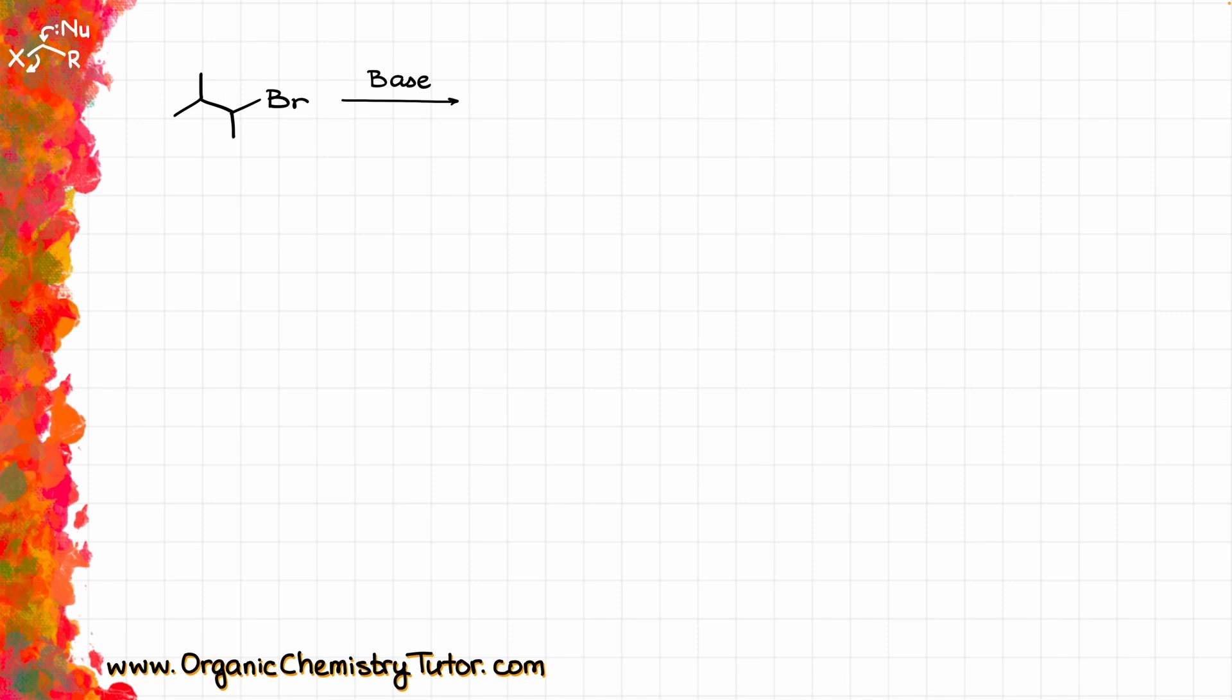What does matter to us is that there are two possible products that we can get here, because if we have a secondary alkyl halide and we are treating it with a base, we are going to be doing the E2 reaction, so that's an elimination reaction, and we are going to get two different products. One product is going to be the result of eliminating HBr where we are using this hydrogen. Let's call it Hydrogen A. And if I'm using Hydrogen A, I'm going to get this product.